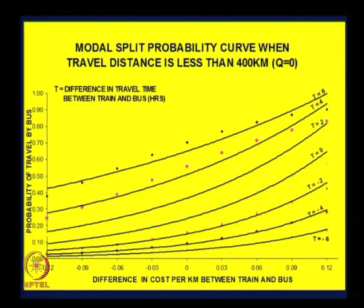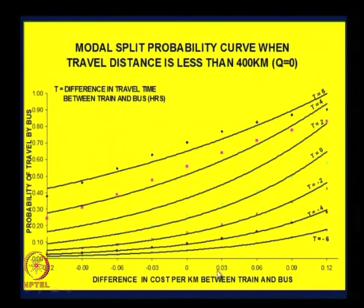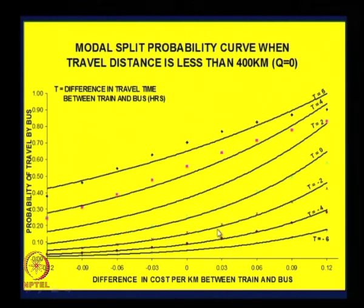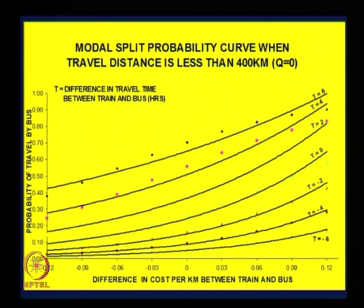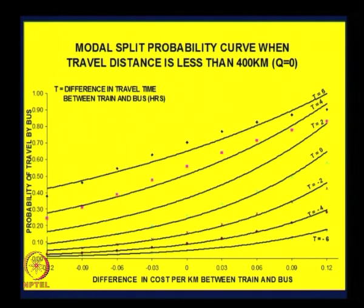On the same lines, you can make plots for the situation where Q is equal to 0; the curves will be slightly different, otherwise there is not much difference in the principle of application. When the travel cost difference is 0.03 and travel time difference is 0, the share by bus in the previous case was around 20 percent, whereas here we find it is nearly 30 percent. When distance is less, the preference of train gets reduced compared to the earlier case, so bus takes an additional share — that is reflected in the presentation.